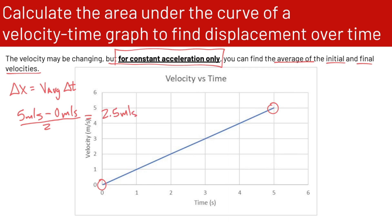So delta x equals 2.5 meters per second times delta t of 5 seconds. 2.5 times 5 gives us a final displacement of 12.5 meters.